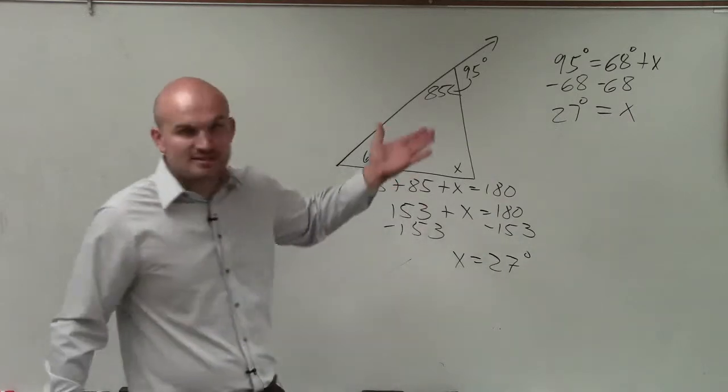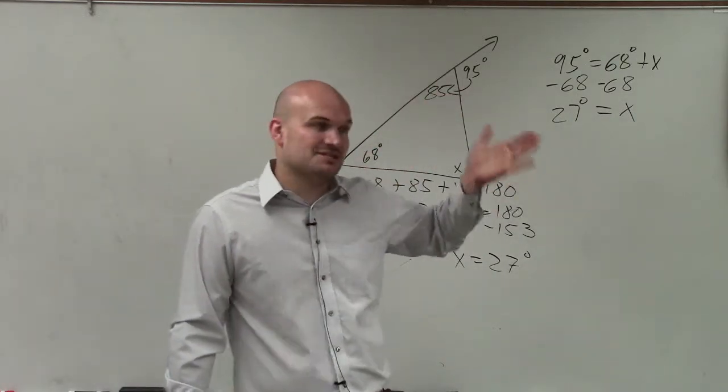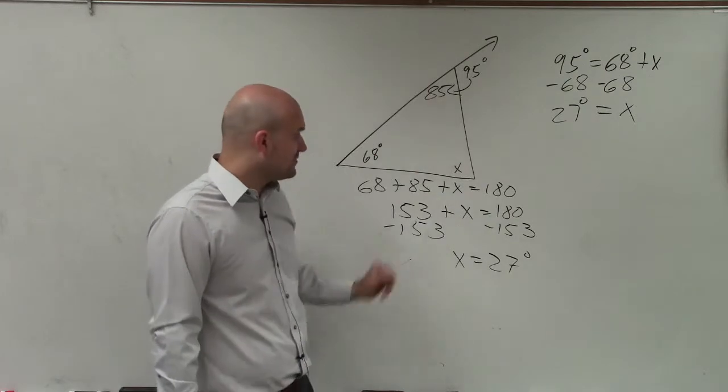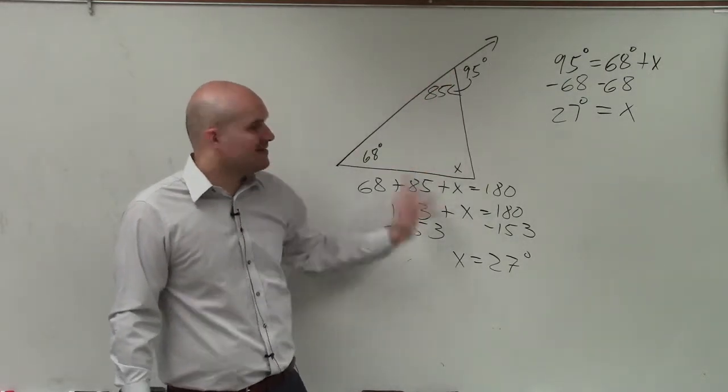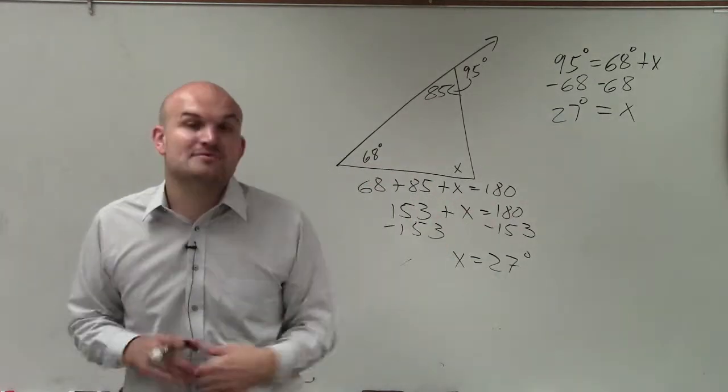So you guys can see both ways. That way is obviously the easiest. You just got to remember the theorem. However, if you don't remember the theorem, hopefully you remember exterior and interior are linear or supplementary. And then the interior angles, that all angles add up to 180. Thanks.